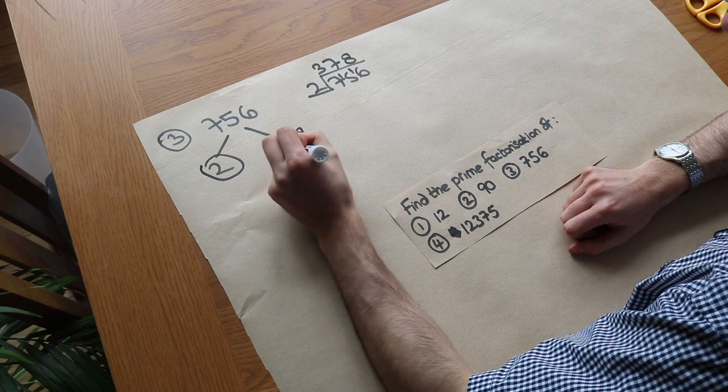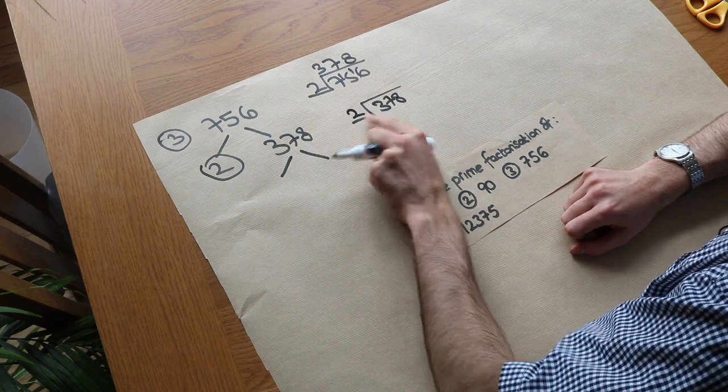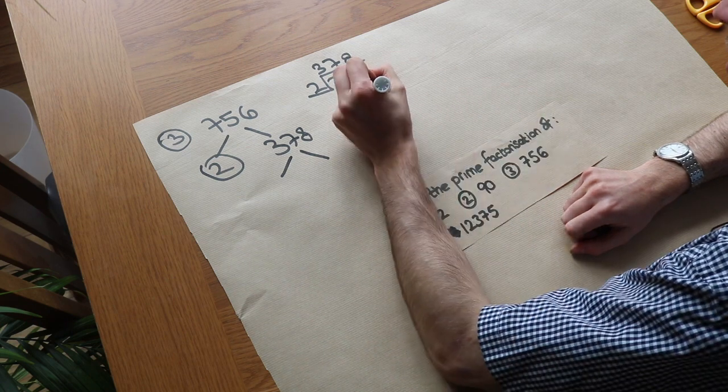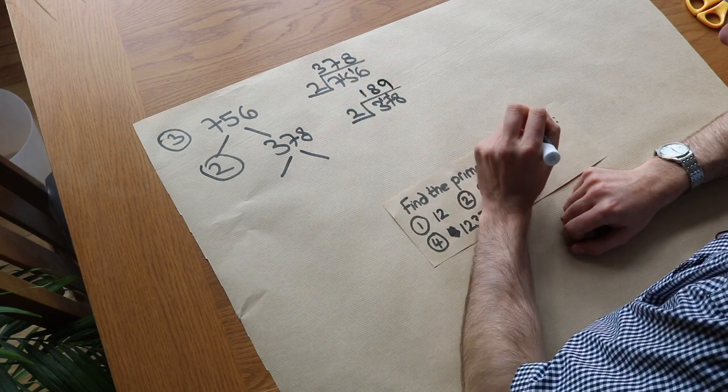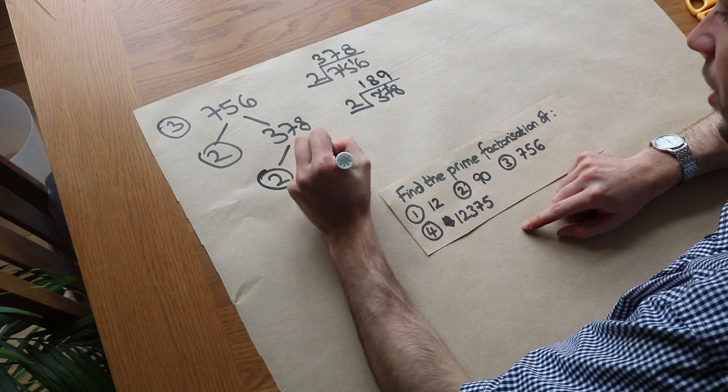But this we can split up further. We can see it's even. So again, we could divide it by 2. 2 goes into 3 once, remainder 1. 2 goes into 17, 8 times, remainder 1. And 2 goes into 18, 9 times. So we know it's 2, which is prime, multiplied by 189.